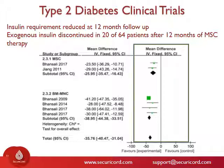You can see that the majority of patients showed significant improvement. For example, 31% of the patients who received mesenchymal stem cells no longer required insulin injections. Based on the results from these clinical trials, we can predict that perhaps one day, stem cell therapy may become a standard of care for treating diabetes.